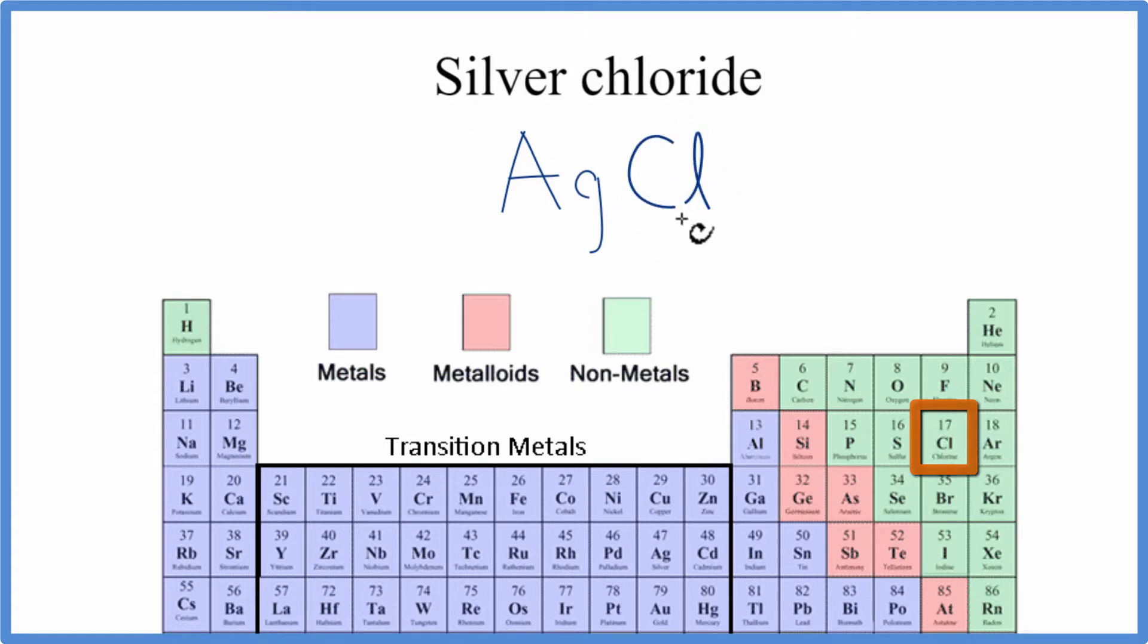Silver's a metal, and then chlorine's a non-metal, so we have an ionic compound. When we have an ionic compound, we need to take into account the charges on each of the elements when we write the formula.